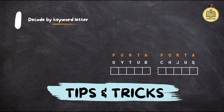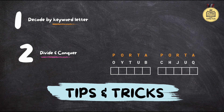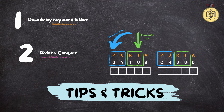The next tip is especially helpful when working with a team: divide and conquer. Each person can take responsibility for one keyword letter and decode all the corresponding ciphertext letters. This way you can work in parallel and speed up the process significantly.